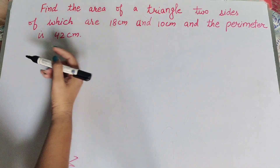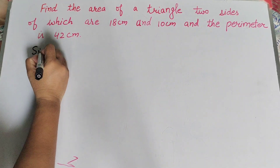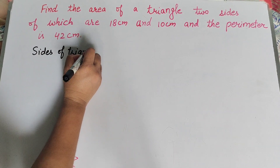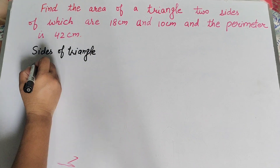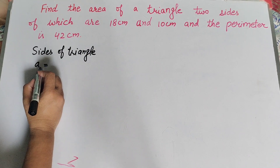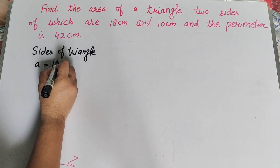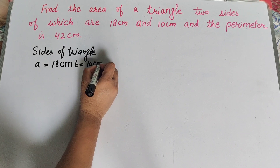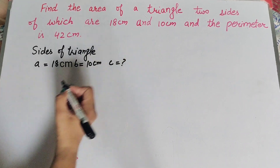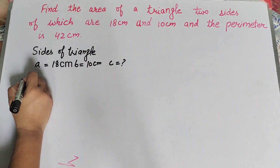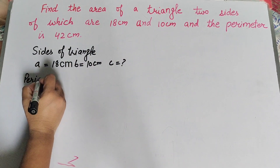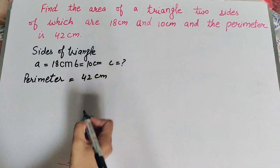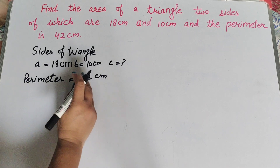Given is the length of two sides of the triangle. Side a is equal to 18 centimeter and other side b is equal to 10 centimeter. The third side of the triangle we need to find, and the perimeter of the triangle is equal to 42 centimeter.